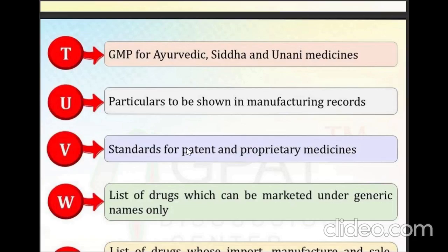GMP means Good Manufacturing Practices. Schedule U covers particulars to be shown in the manufacturing record. Schedule V stands for standards for patent and proprietary medicines. And Schedule W is the list of drugs which can be marketed under generic names only.